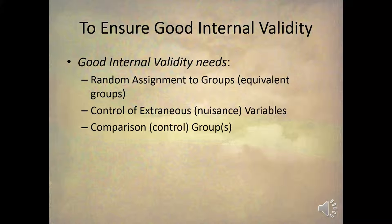To ensure good internal validity, you need random assignment to groups — such as equivalent groups. You need the control of nuisance variables to make sure they don't confound. And then you need a comparison group. As long as you have these three things, you have good internal validity.